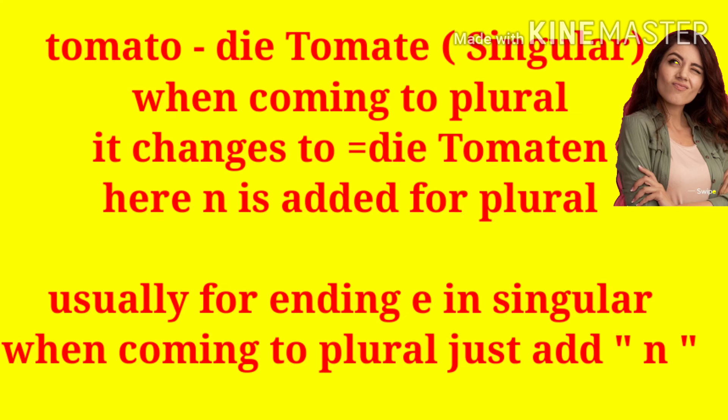When 'Tomate' comes to plural, it changes to 'die Tomaten' — the letter 'n' is added for the plural. So 'die Tomate' in singular becomes 'die Tomaten' in plural. One more thing about plural: even if a word is masculine in singular — with the article 'der' — its plural will also change to the article 'die.'